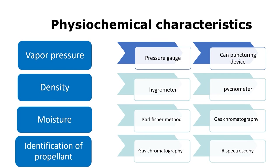Identification of propellant is done by gas chromatography and IR spectroscopy. The same techniques can also be used to determine the proportion of each component in a blend.